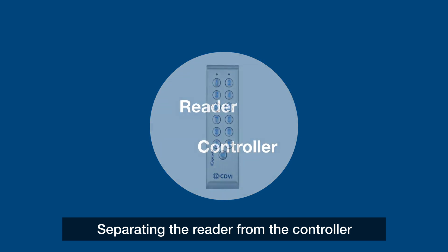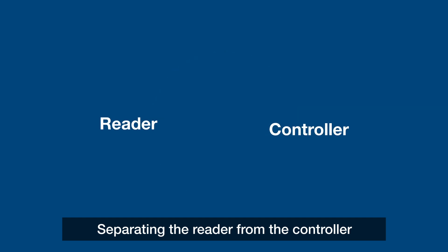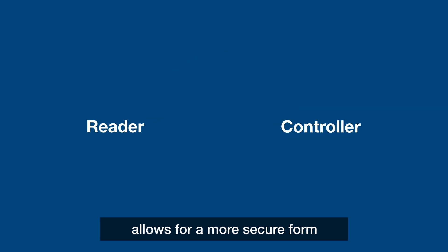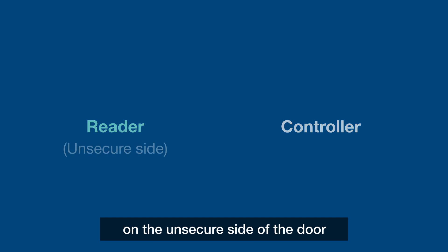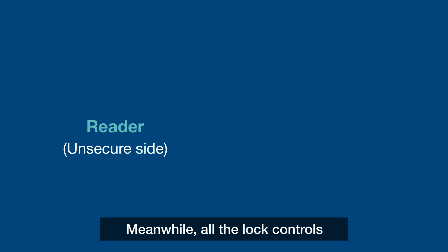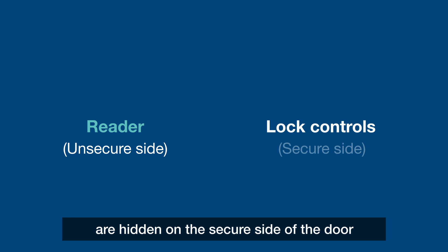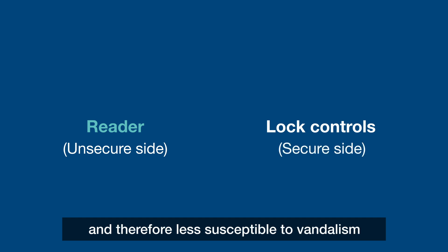Separating the reader from the controller allows for a more secure form of access control by having only the reader on the unsecure side of the door. Meanwhile, all the lock controls are hidden on the secure side of the door and therefore less susceptible to vandalism.